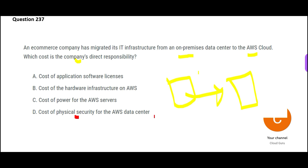Option D says cost of physical security — that security guard, whether it's Ramu Kaka or someone else, you don't know who is there. That is AWS's responsibility, not yours. Cost of power for AWS servers — you don't know what the data center is paying; that is not your responsibility either. Cost of hardware infrastructure — you are not buying rack space or blade servers. You are totally immune to that.